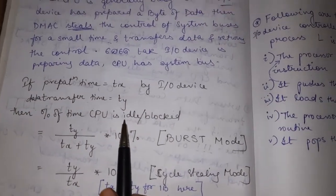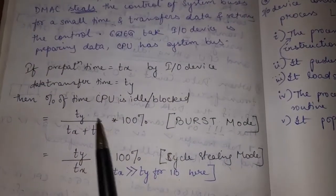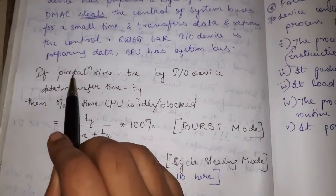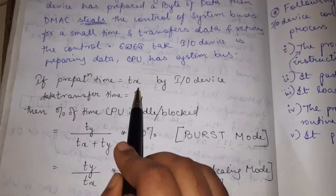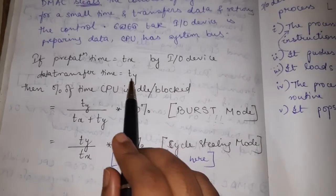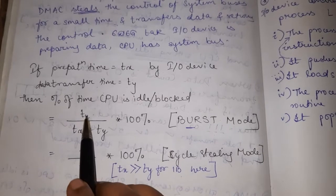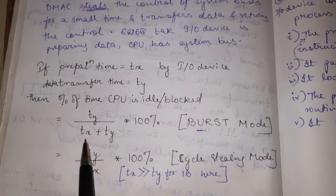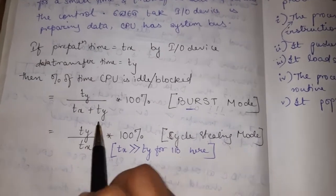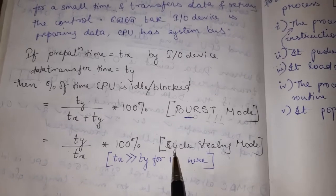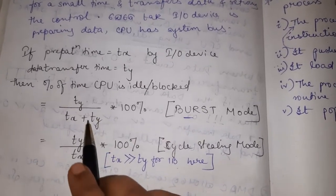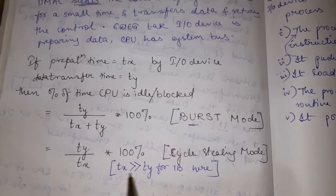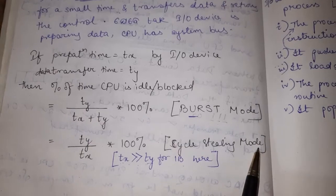In cycle stealing mode and burst mode, the time taken for data transfer or the percentage of time the CPU is idle is calculated as follows: let tx be the preparation time and ty be the data transfer time. In burst mode, it is ty divided by (ty + tx), multiplied by 100 — since ty is large. For cycle stealing mode it is only tx, because tx is much greater compared to ty, as only one byte of data is transferred.